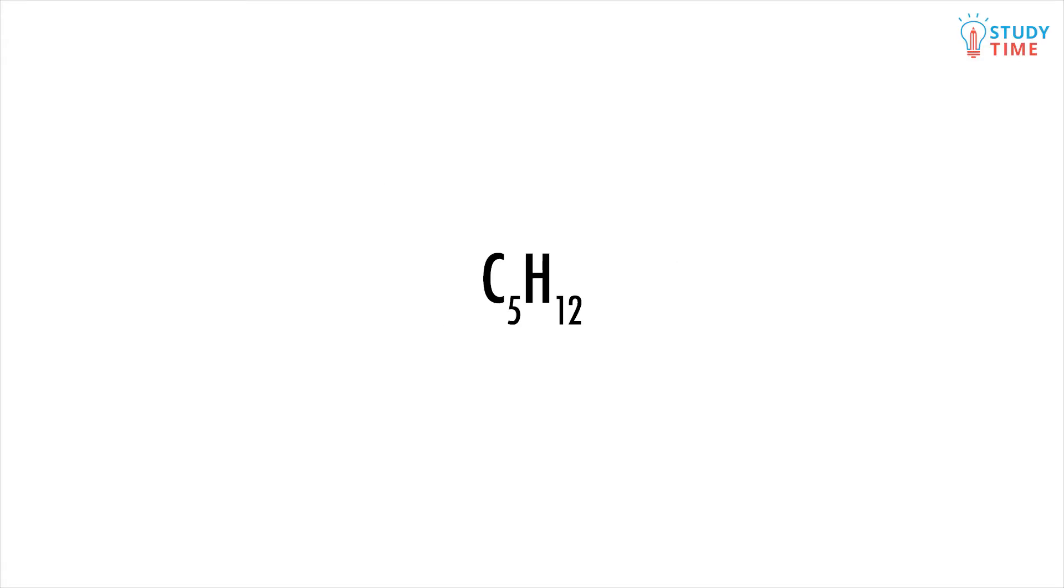Remember, a molecular formula will tell you the number of each kind of atom in the molecule, but not necessarily the functional group or the overall shape of the molecule. What we have in this case is something called isomerism, where multiple different molecules have the same atoms but arranged in different ways.